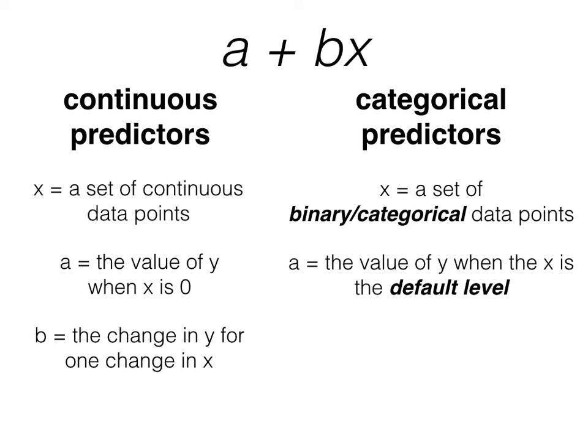For a continuous predictor, b is the change in y for one change in x, but for a categorical predictor, b is the change in y when x is the non-default level of the category. As before, let's go over this in more detail with a real-world example.